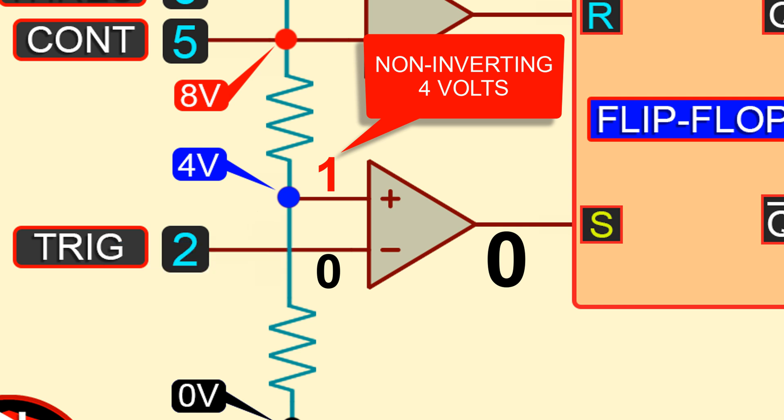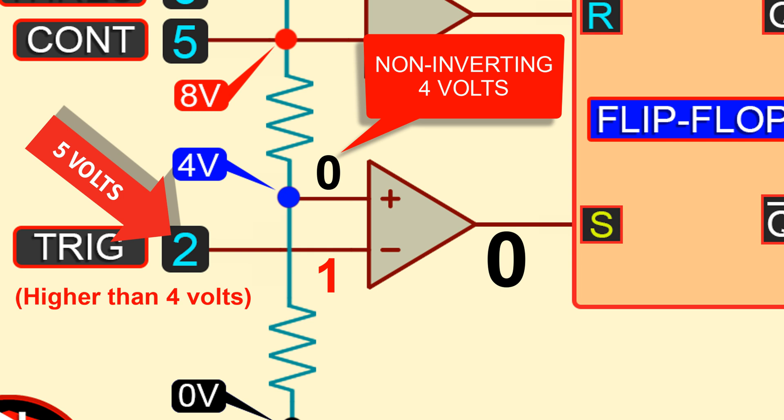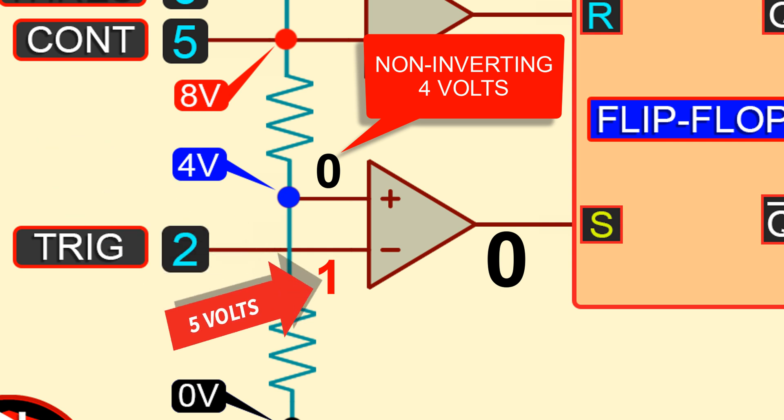Then, if we supply 5 volts to the trigger pin, then the trigger pin will be high. At this time, the comparator will output a high voltage.